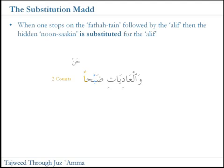What actually happened there is this. Originally, in the tanween, we have the hidden nun, which is the tanween itself. So it's effectively the two fat-tains here could be rewritten as the ha, fatah, and nunsakin — so 'han'. Now when we stop, we implement what is known as the substitution mad. We effectively pronounce this as 'ha'. So that hidden nunsakin has been replaced by the alif that you actually see, which accompanies the fat-tain. This is why it's called the substitution mad — because the nunsakin is substituted by the alif if we choose to stop.